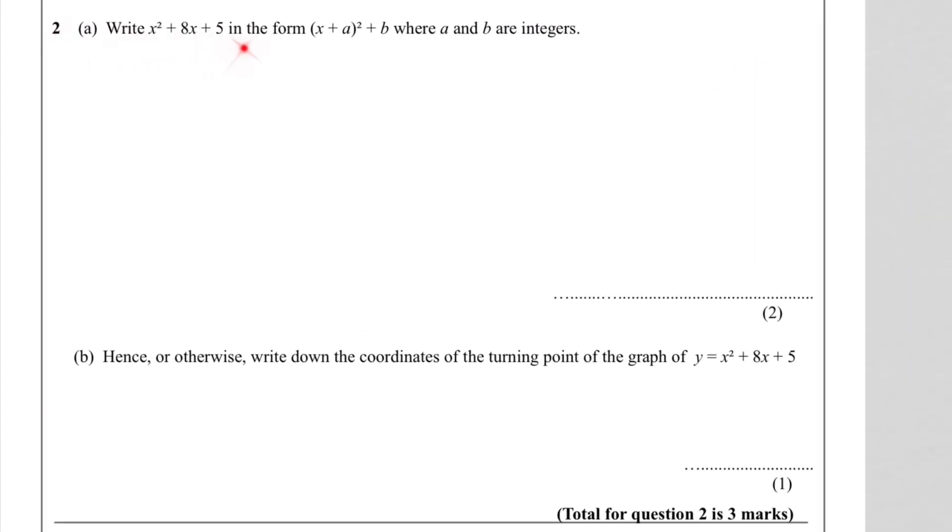For question 2, we need to use completing the square. The general equation is ax² + bx + c. Here you can see a is 1, b is 8, and c is 5.